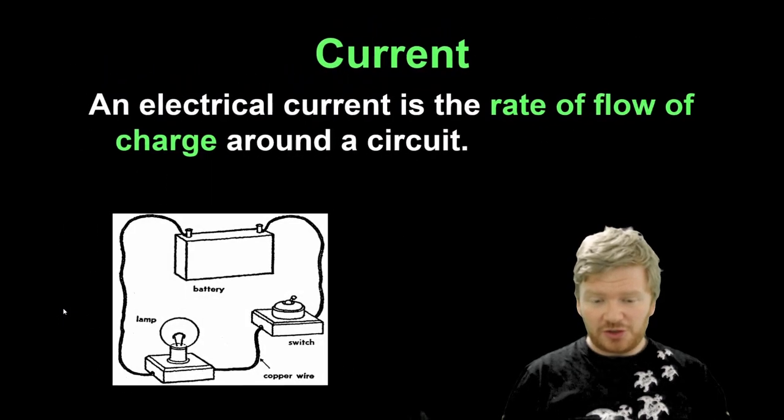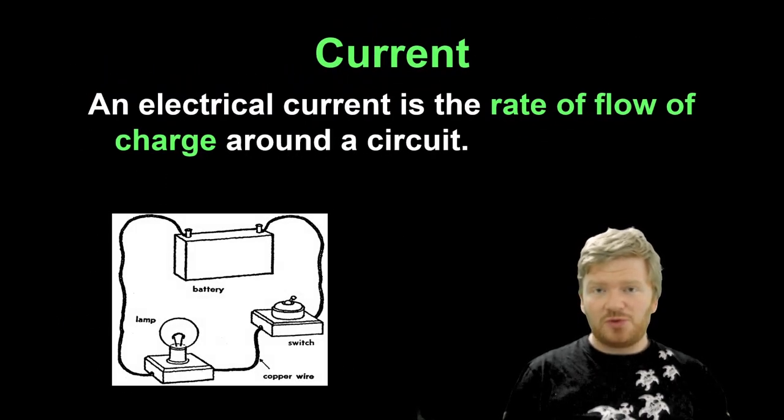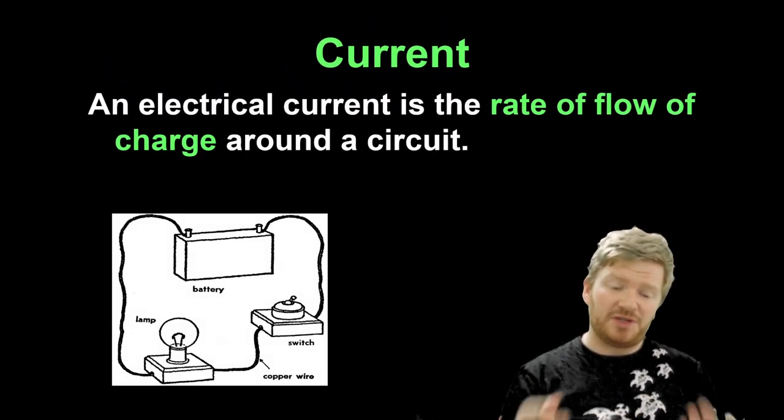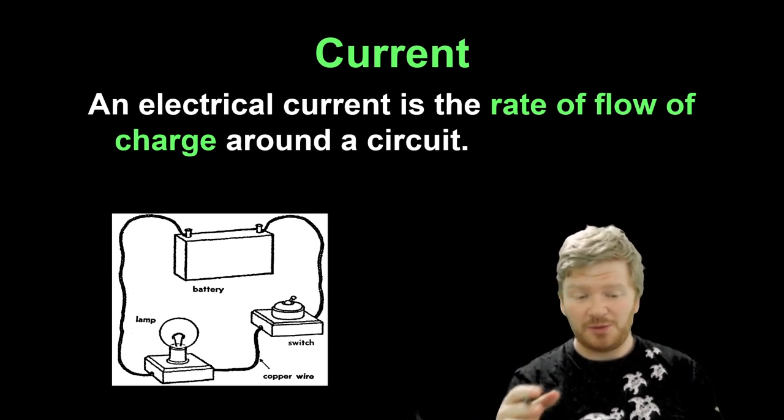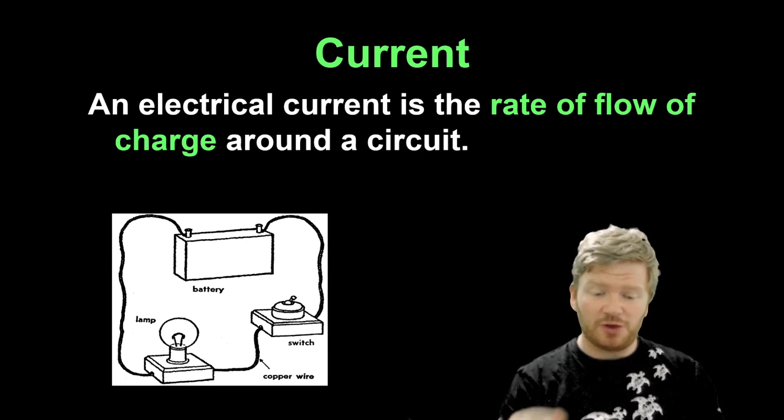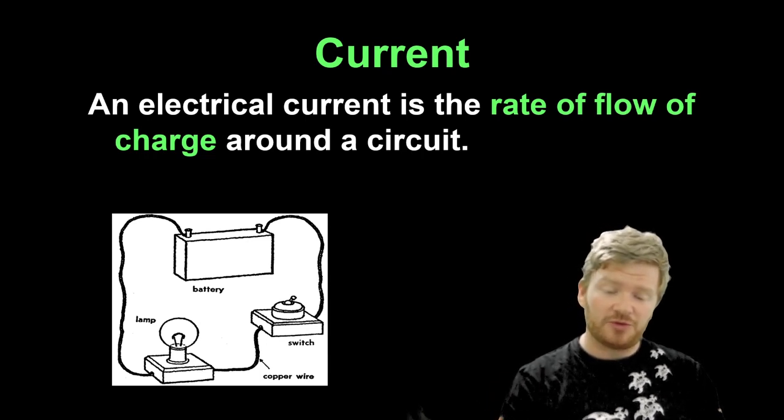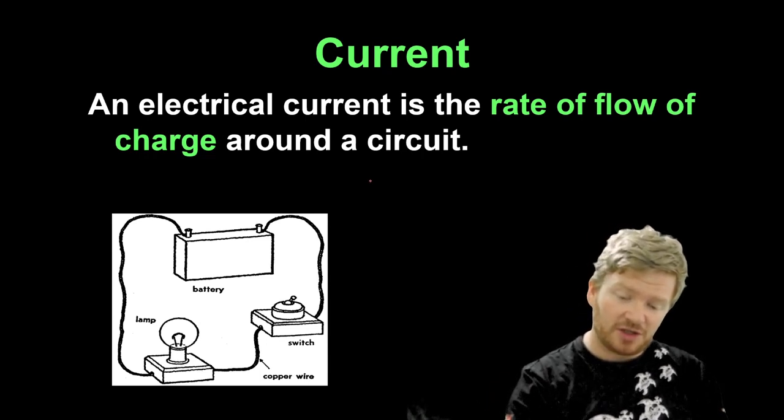So that's all very well and good. So let's go back more to something that we're familiar with from Key Stage 3, which is current. So the definition that you should be familiar with is that an electrical current is a rate of flow of charge around a circuit. So in mathematical terms, we can say therefore that current is equal to Q divided by T.